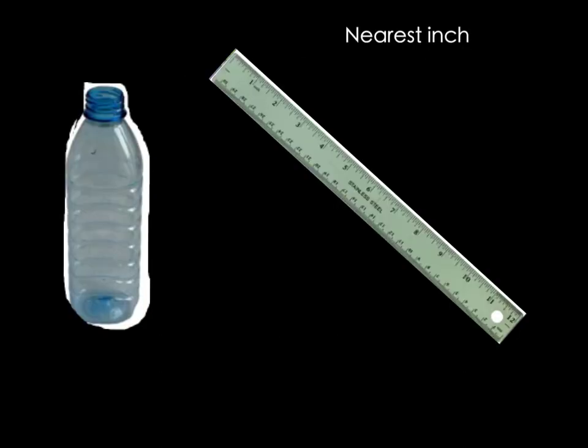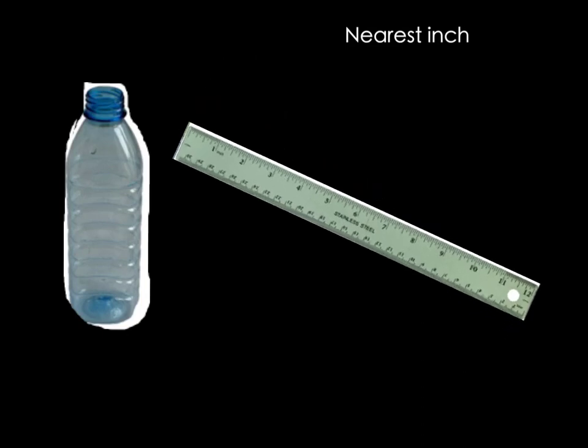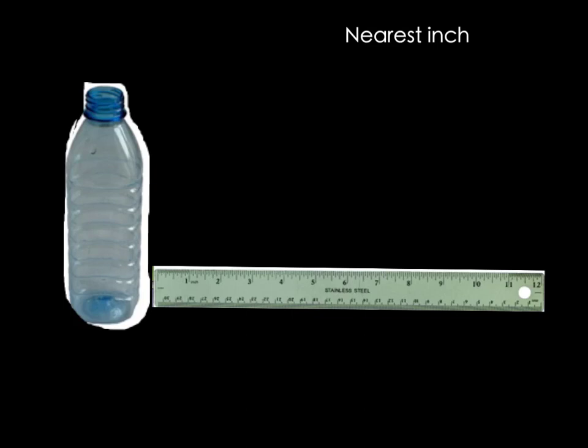First we're going to measure to the nearest inch. So I'm going to take my ruler and I can see that my ruler has two sides. One side is inches and one side is centimeters. I know which is which because the inches are larger, one inch is larger than one centimeter.